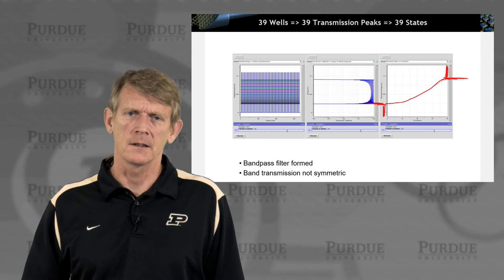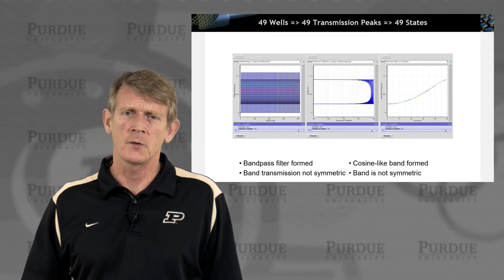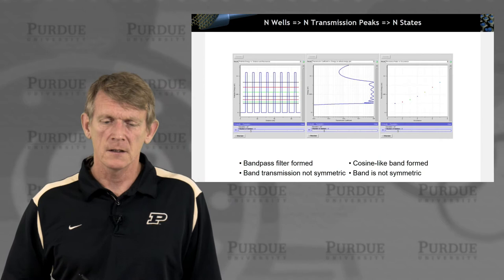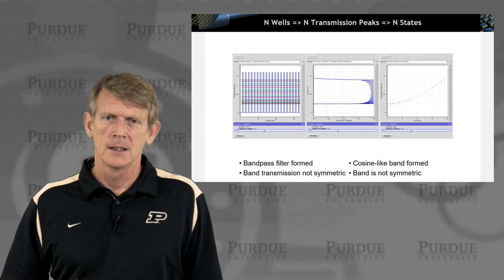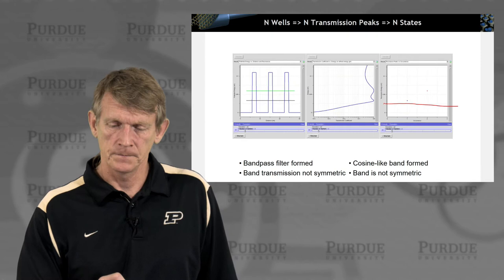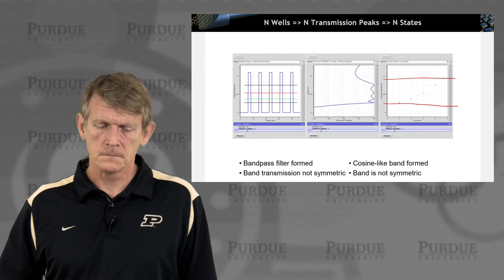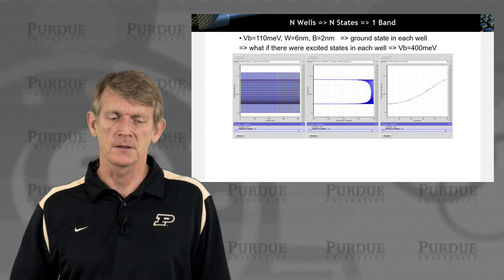The resulting form is somewhat cosine-shaped and not perfectly symmetric. The animation shows the emergence of these bands, and the final result as a single picture confirms: with N wells, we get N states and one band.